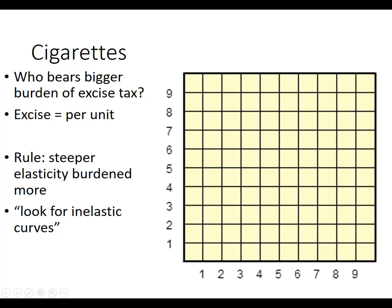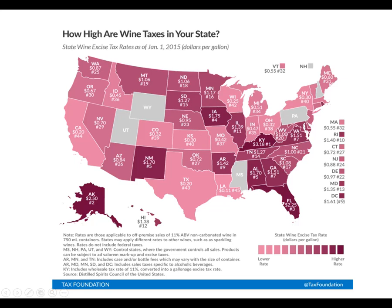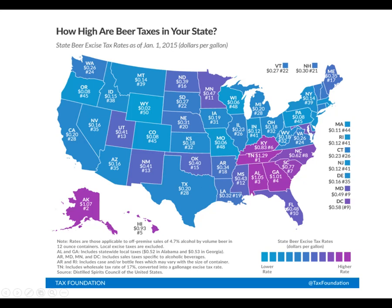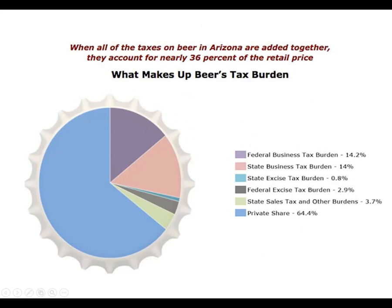The general rule is: whoever has the steeper elasticity is going to be burdened more. Just draw the elasticities and you'll get the right answer. Similar effects happen with alcohol. Arizona's wine tax is 84 cents per gallon and the beer tax is 16 cents per gallon — both excise taxes. Beer is a cheap product to produce — yeast, barley, and sugar — but much of its price is based on these per unit taxes.